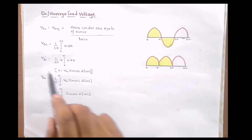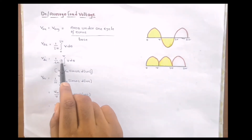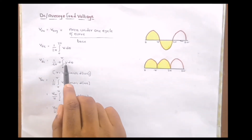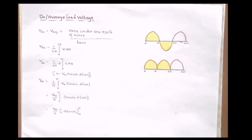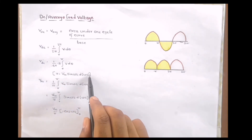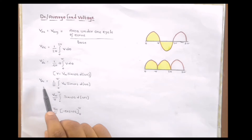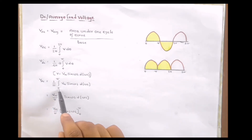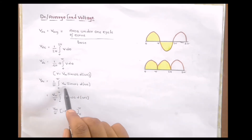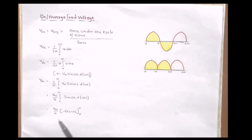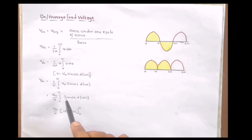This equation can be written as Vdc = (1/2π) × 2 × ∫₀^π V dθ. The two's cancel, and substituting V = Vm sin(ωt) dωt, we get Vdc = (1/π) × ∫₀^π Vm sin(ωt) dωt. Taking Vm outside the integral gives Vdc = (Vm/π) × ∫₀^π sin(ωt) dωt. The integral of sin(ωt) is −cos(ωt).